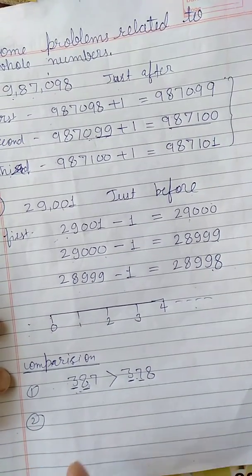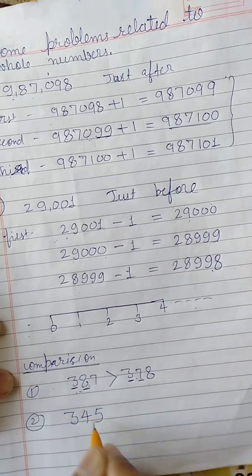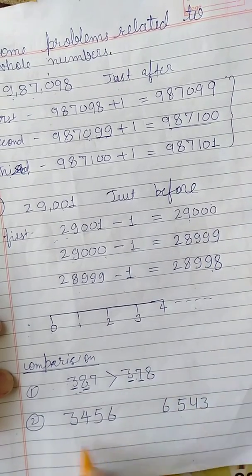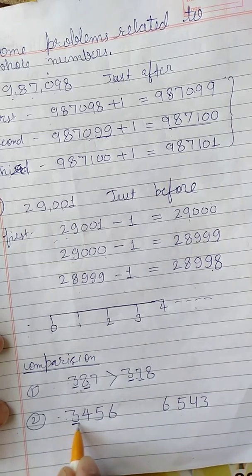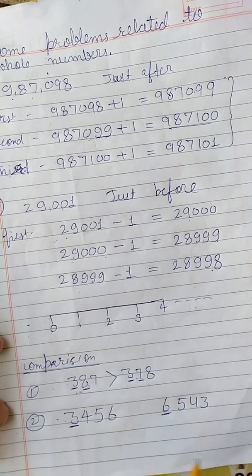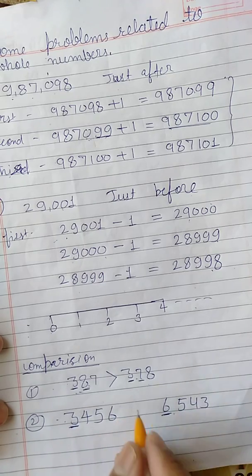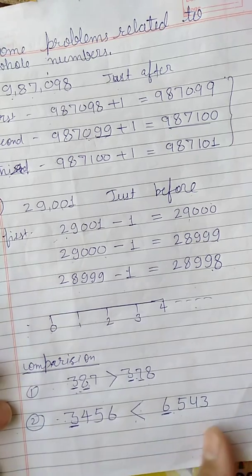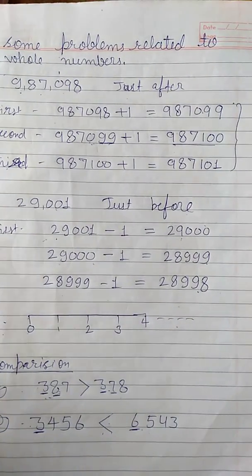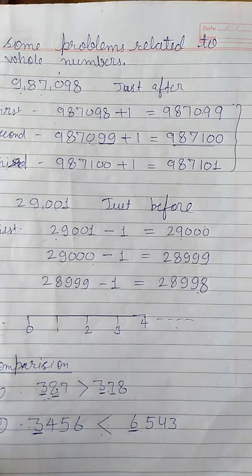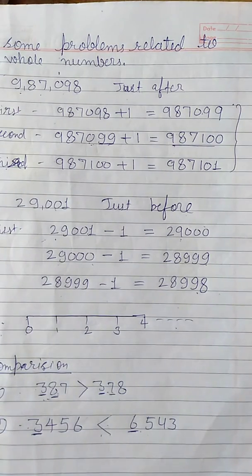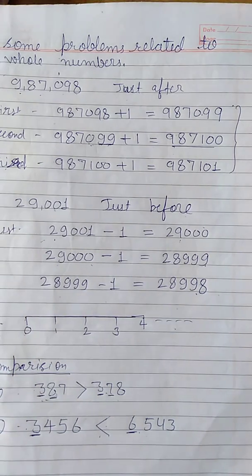One more example: 3456 and 6543. Starting from the left, the first digit of the first number is 3 and the first digit of the second is 6. Since 6 is greater, 6543 is the greater number — no need to check the other digits. The greater-than sign opens toward the greater number. This is the easy method for comparison.